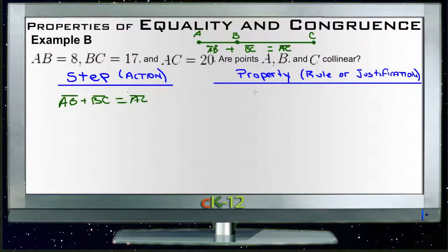And now we can use our segment addition postulate, which is what this information up here we just went over was. The segment addition postulate is what we need to do to prove that these two things are actually collinear.